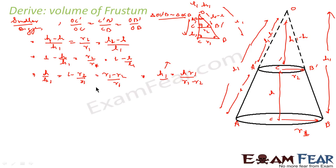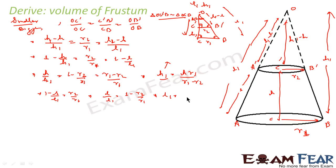Similarly, let me find L1 in terms of L, R1, and R2. From the ratio 1 minus L/L1 equals R2/R1, we get L/L1 equals (R1 minus R2)/R1, so L1 equals L·R1/(R1 minus R2). I have now found H1 and L1 in terms of H, L, R1, and R2. Fifty percent of the battle is won.